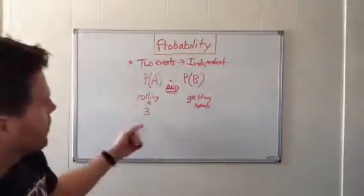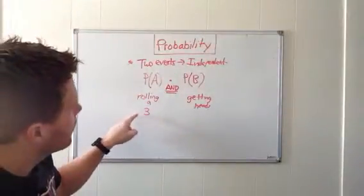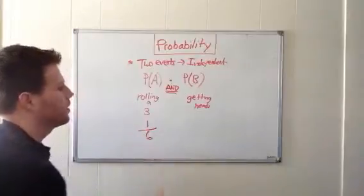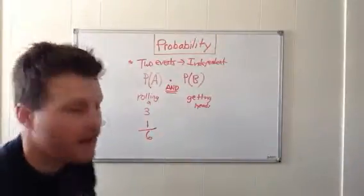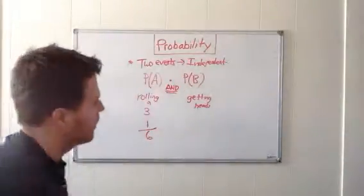of six. What's the probability of getting heads when we flip a coin? One out of two.